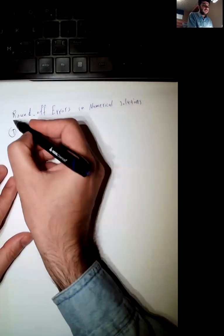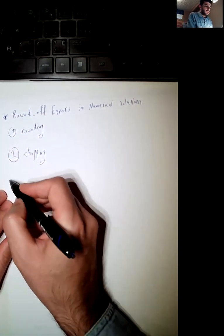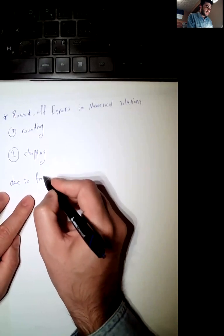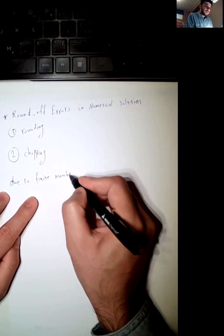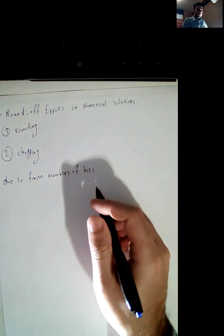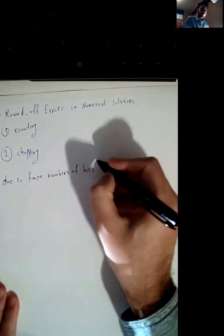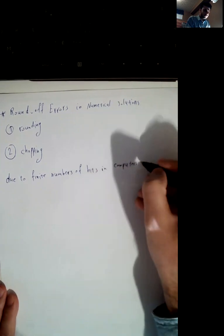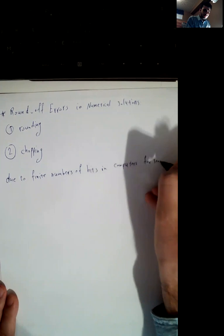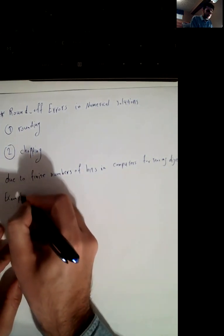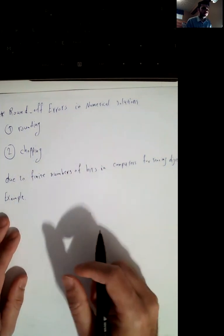So if I want to define the rounding of errors, these errors are due to limited or finite numbers of bits in computers for exploring digits. I'll give you an example to see how rounding and chopping can influence on the solution.